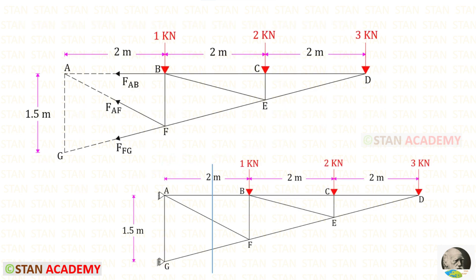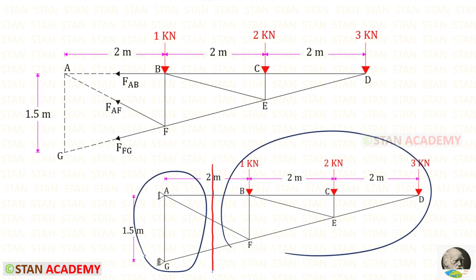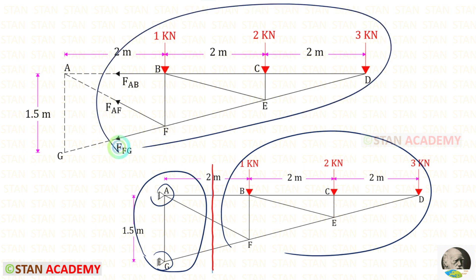We have to make a section like this because this section cuts all three members. We can take either the left side or the right side. If we take the left side, we have to find the reactions at points A and G. So it is better to take the right side and find the member forces, because there is no need to find the reactions.